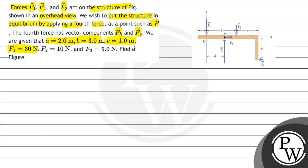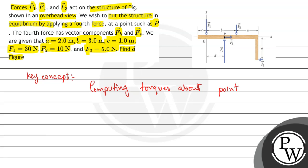F1 equals 30 newtons, F2 equals 10 newtons, F3 equals 5.0 newtons. Find D in the figure. Let's see the key concept. The equation gives D equals F2 times B plus F3 times A for the given system.